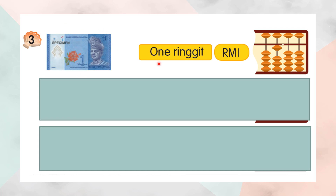One ringgit. For one ringgit, you have to put RM in front and ringgit behind. One ringgit. The dot separates — behind the dot is sen and in front is ringgit. So this is one, so this is RM1 ringgit.